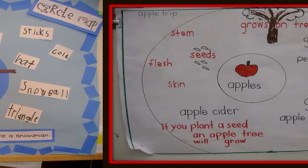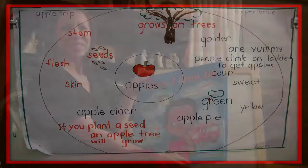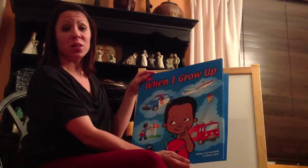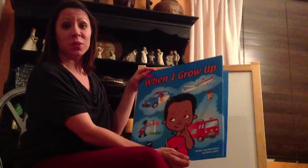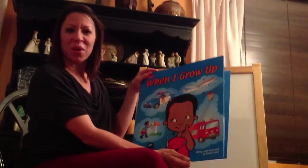Our last example is about apples. This circle map tells us that apples can be green, you can make apple pie with apples, and they grow from seeds. So now that you're all circle map pros, let's read our story and create one of our own.